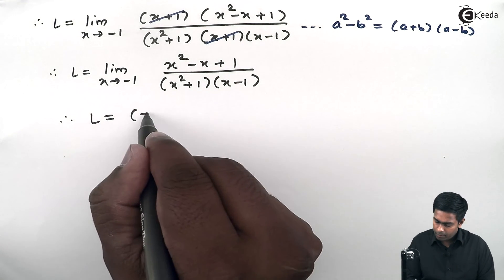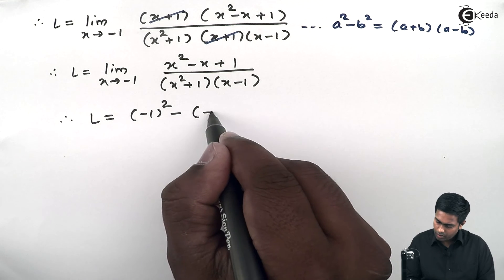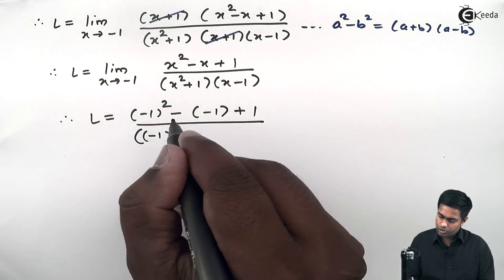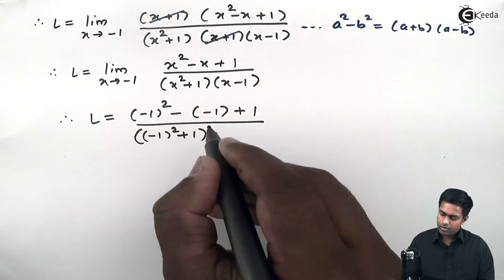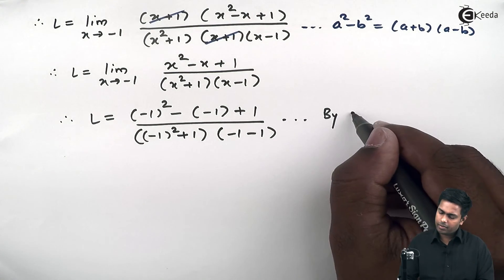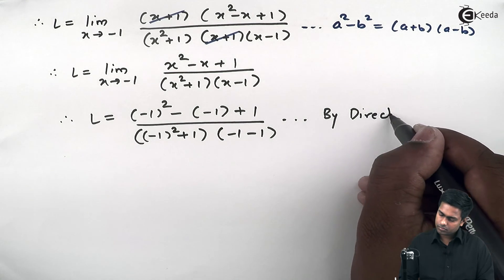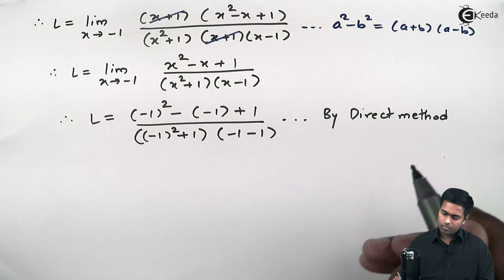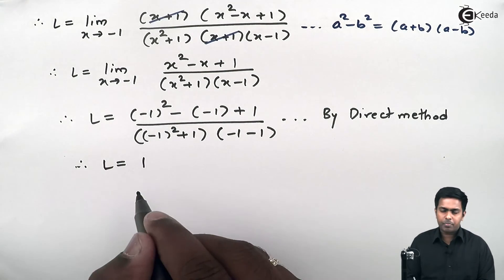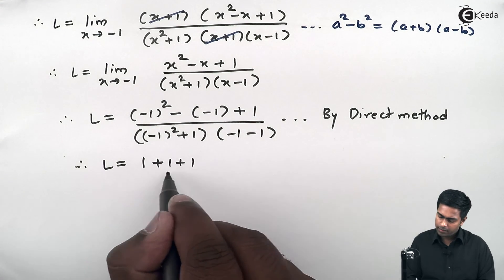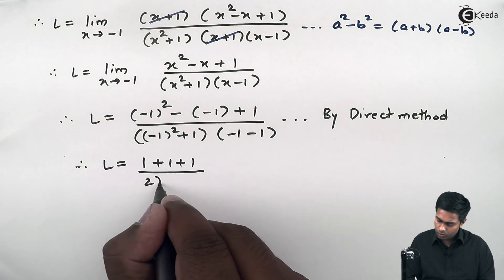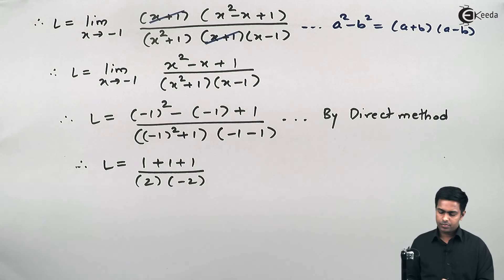Applying the direct method by substituting x = -1: the numerator becomes (-1)² - (-1) + 1 = 1 + 1 + 1 = 3. The denominator becomes [(-1)² + 1] × [(-1) - 1] = 2 × (-2) = -4. So we get 3 upon -4.